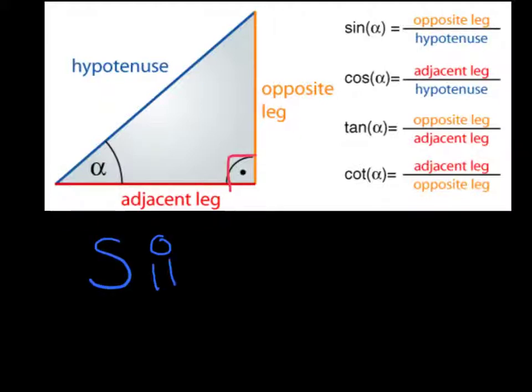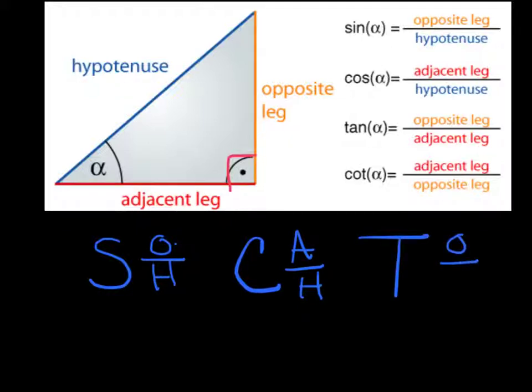SOH, sine is opposite over hypotenuse. CAH, cosine is adjacent over hypotenuse. And TOA, tangent is opposite over adjacent. SOH-CAH-TOA.